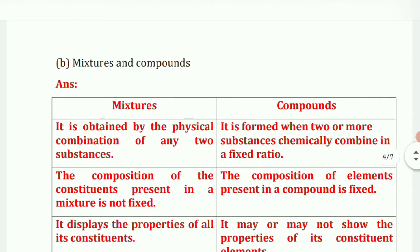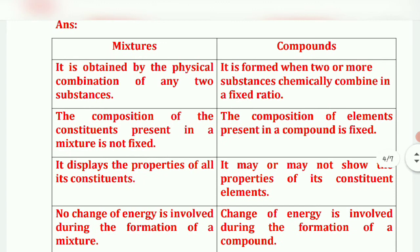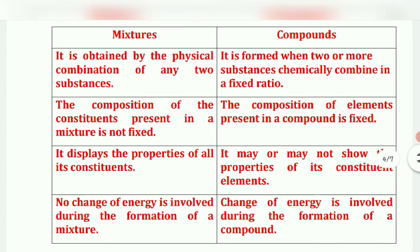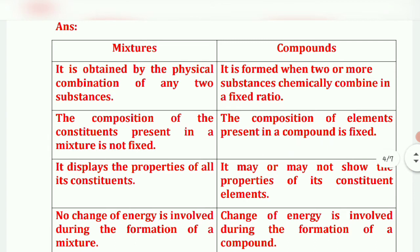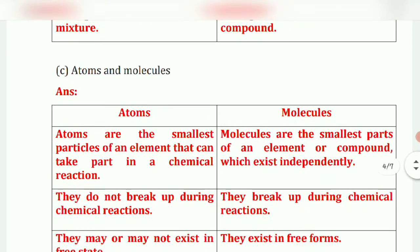Mixtures versus compounds. A mixture is obtained by the physical combination of any two substances. A compound is formed when two or more substances chemically combine in a fixed ratio. The composition of constituents in a mixture is not fixed, while in a compound it is fixed. A mixture displays the properties of all its constituents; a compound may or may not. No change of energy is involved during formation of a mixture, but a change of energy is involved during formation of a compound.